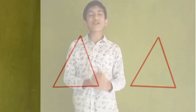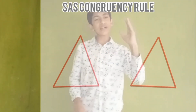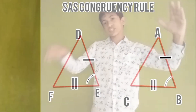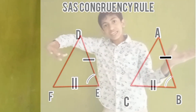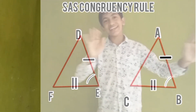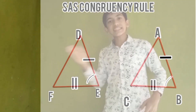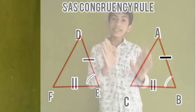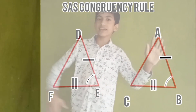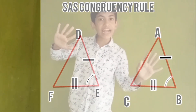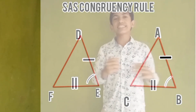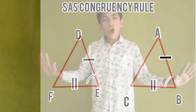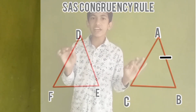Next is Side-Angle-Side (SAS) congruency rule. For example, AB equals DE, BC equals EF, and angle B equals angle E — that is Side-Angle-Side. If two sides and the included angle of one triangle are equal to the two sides and the included angle of another triangle, then the two triangles are said to be congruent by SAS congruency rule. If two triangles are congruent, all other remaining content will be equal to one another.